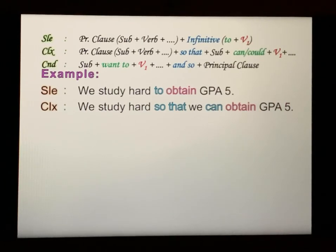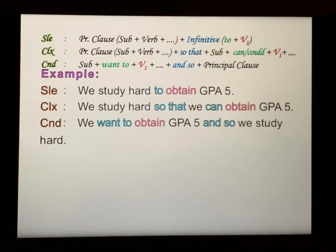For the compound sentence: We want to obtain GPA 5, and so we study hard. Here we use 'want to' plus verb, then 'and so' plus the principal clause.